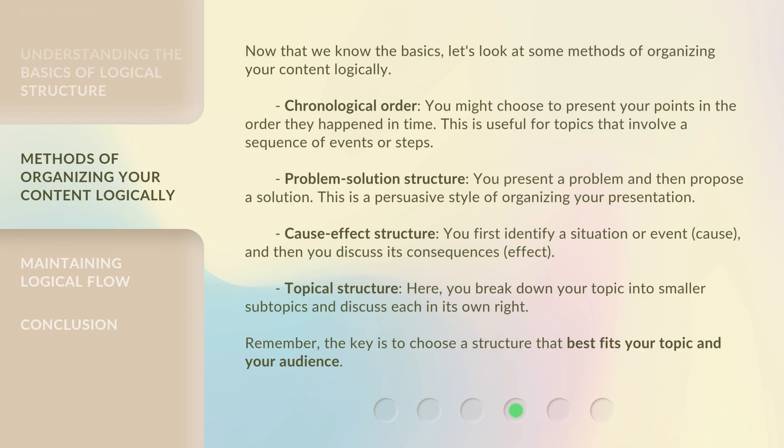Now that we know the basics, let's look at some methods of organizing your content logically. Chronological order: you might choose to present your points in the order they happened in time — useful for topics involving a sequence of events or steps. Problem-solution structure: you present a problem and then propose a solution, a persuasive style of organizing your presentation. Cause-effect structure: you first identify a situation or event (cause) and then discuss its consequences (effect). Topical structure: you break down your topic into smaller subtopics and discuss each in its own right. Remember, the key is to choose a structure that best fits your topic and your audience.